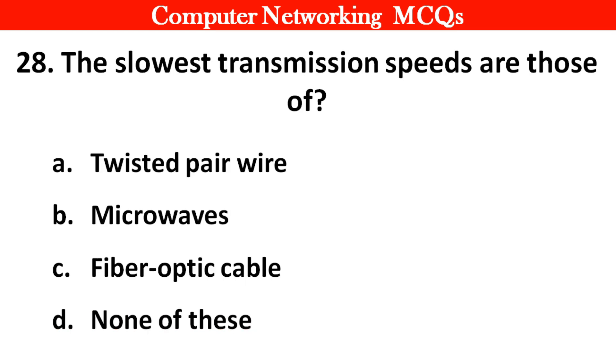Question 28: The slowest transmission speeds are those of? Right answer is option A: Twisted pair wire.